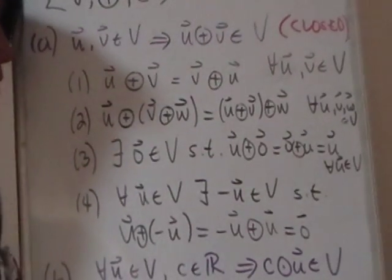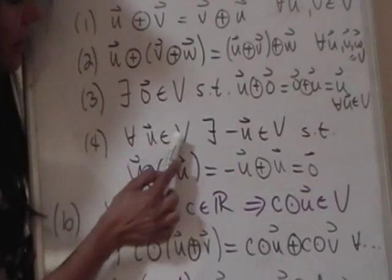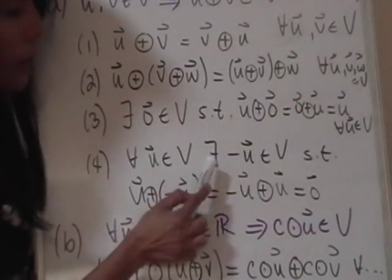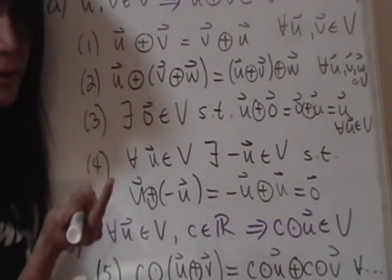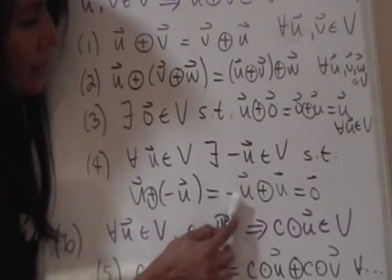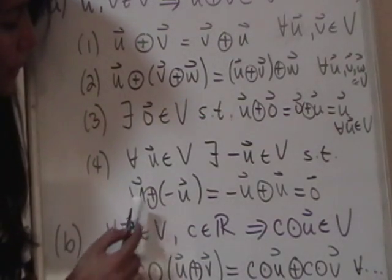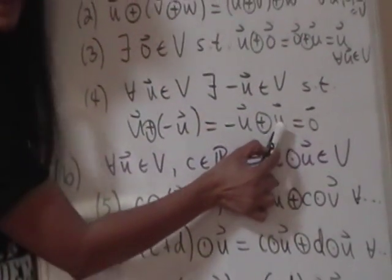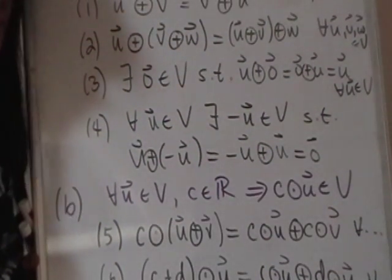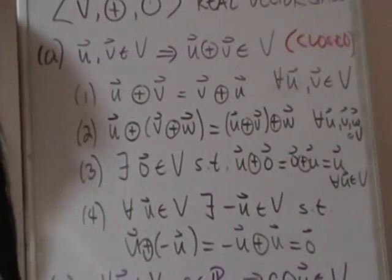Property four says: for any element U in V, you should be able to find a negative U — essentially the circle-plus inverse of U in V — such that U circle-plus (−U) equals (−U) circle-plus U equals the identity zero. These four properties all relate to the circle-plus operation.